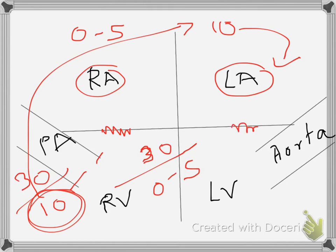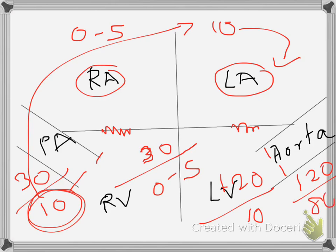The left atrium is a venous system, so the average pressure in the left atrium is equal to 10. The mitral valve opens during diastole, and the left ventricle diastolic pressure is 10. During systole, the left ventricle can contract, and from a pressure of 10, with so much muscle, it can go up to a pressure of 120. This opens the aortic valve, and the systolic pressure in the aorta becomes 120, and the diastolic pressure is 80.